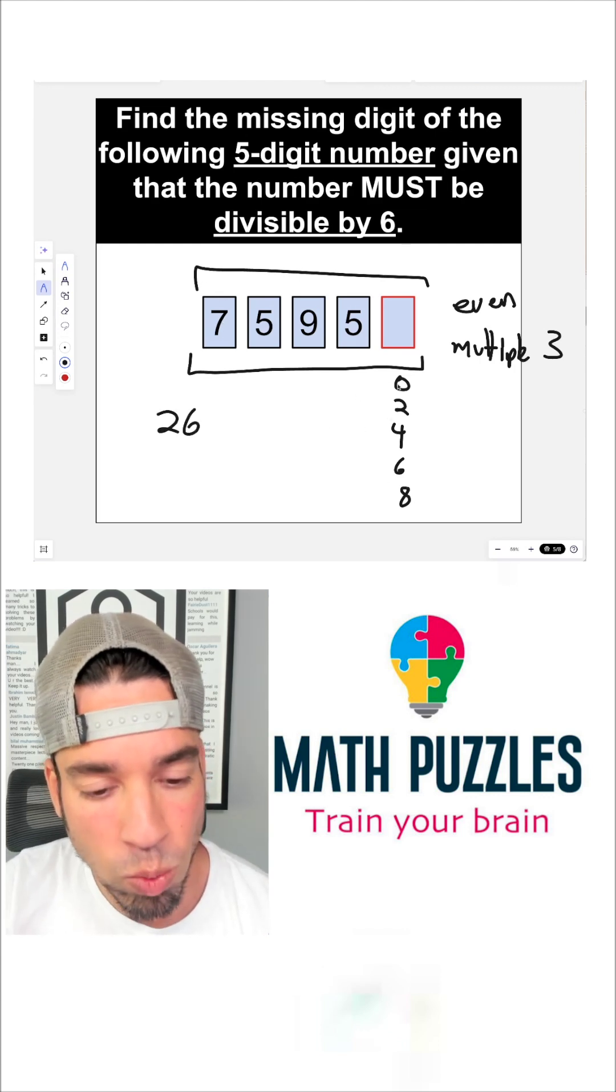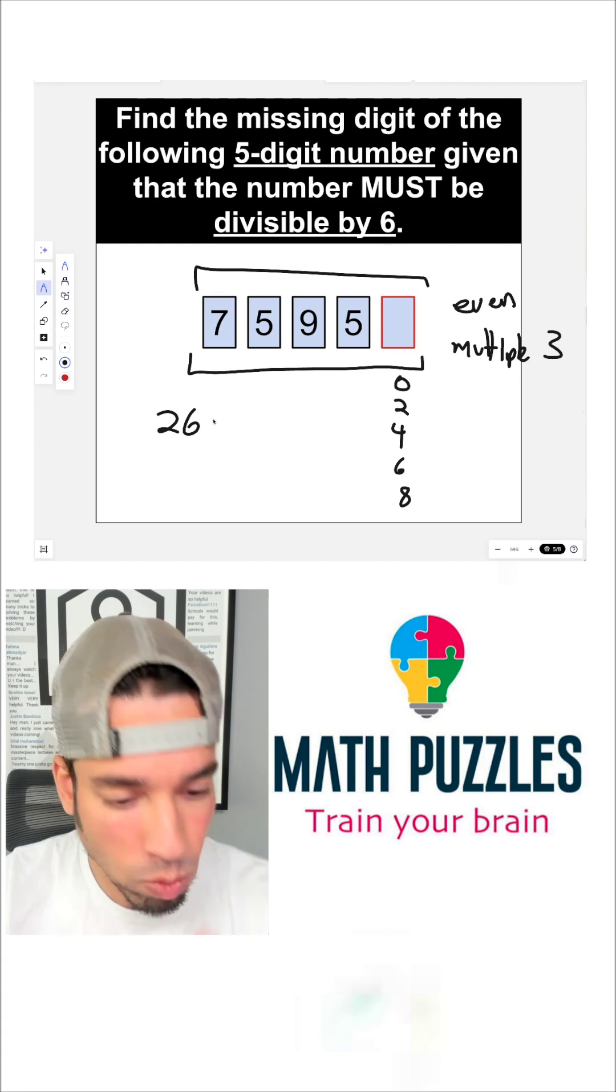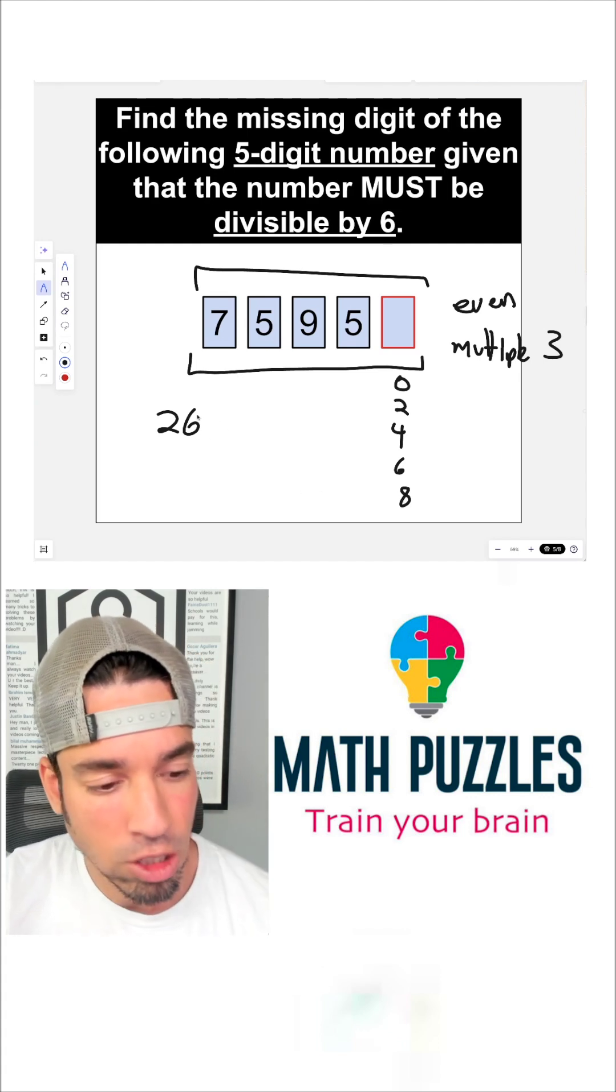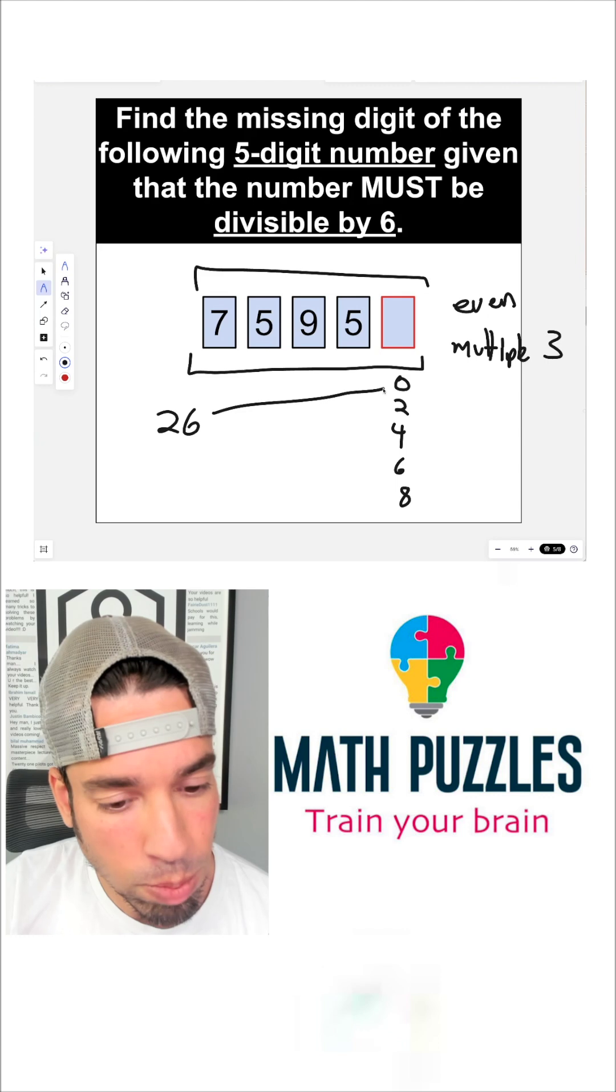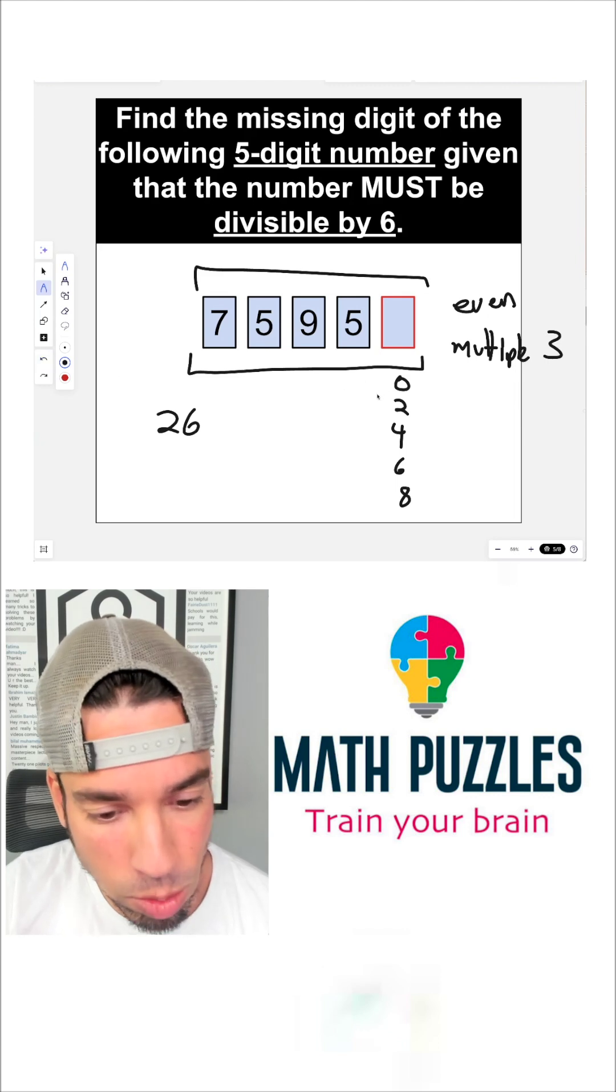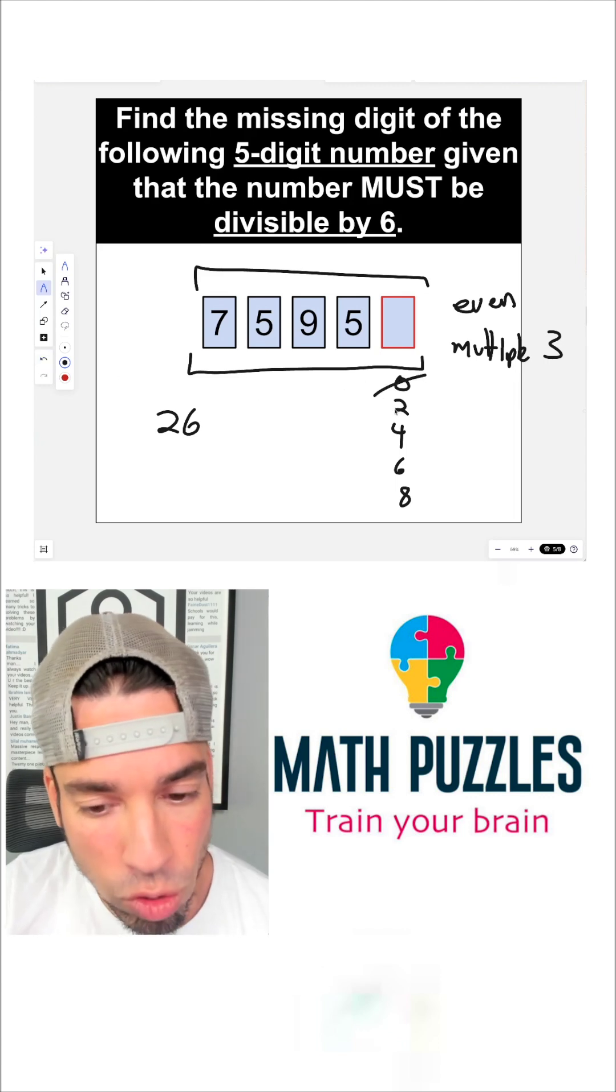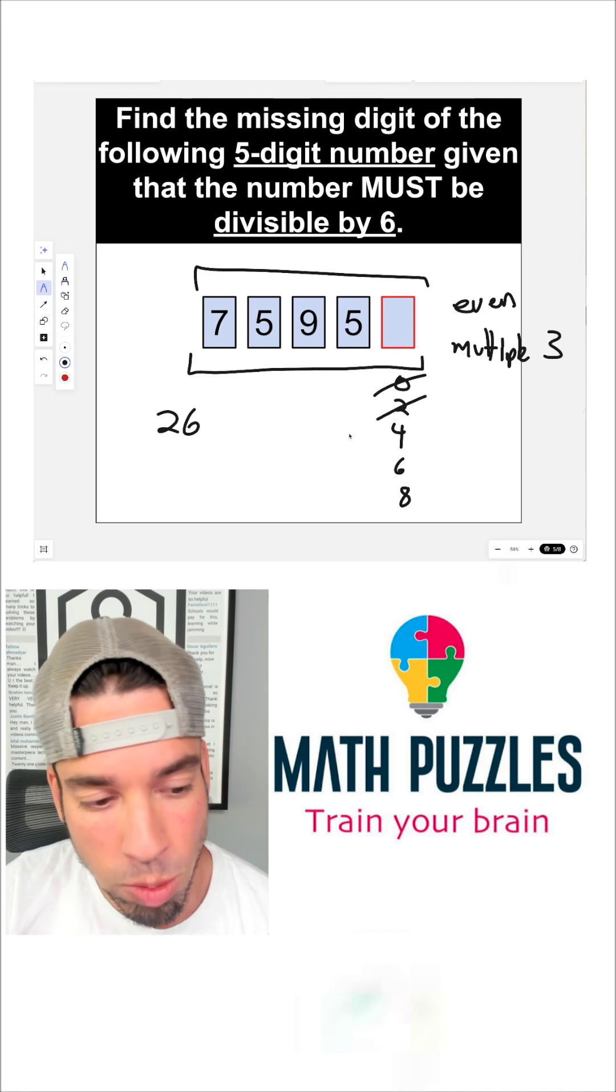We need it to be one of these five options, and when we add this last digit to 26, it needs to be a multiple of three. 26 plus zero is 26. That's not divisible by three. 26 plus two is 28. That's not divisible by three.